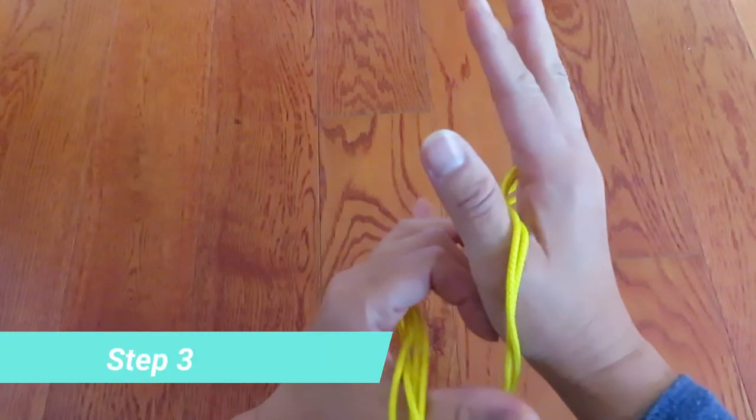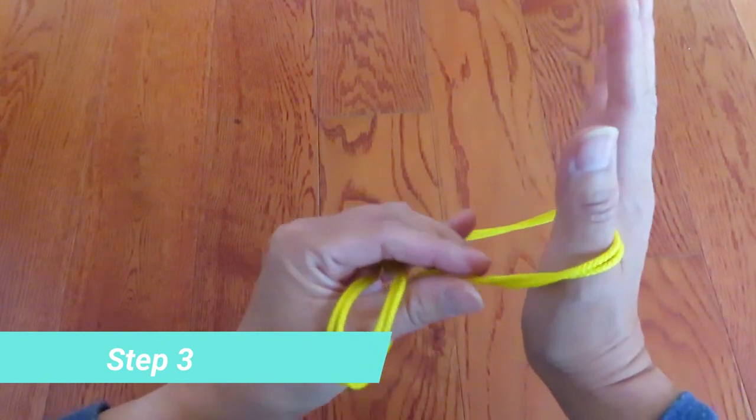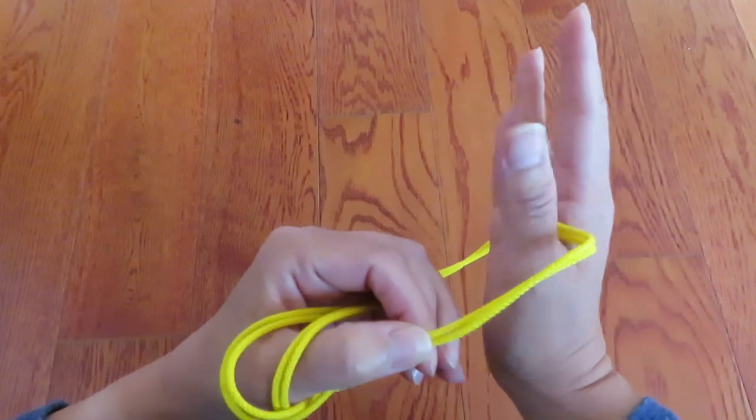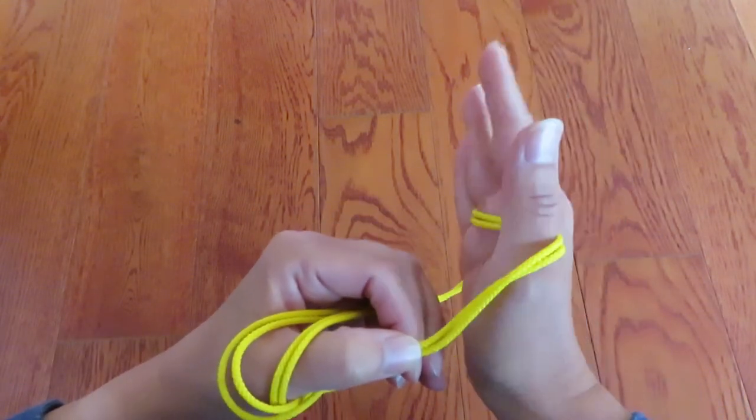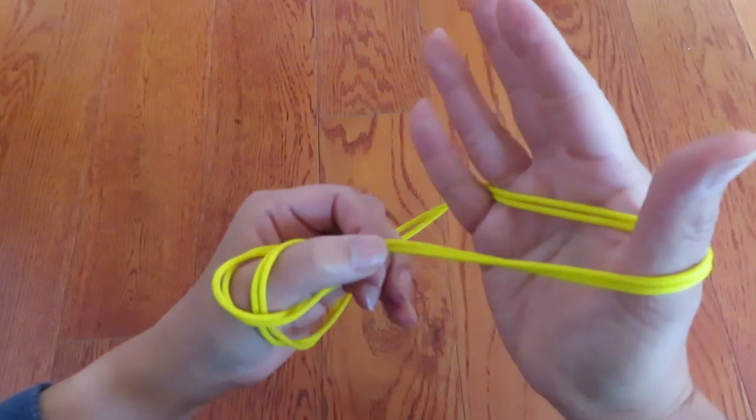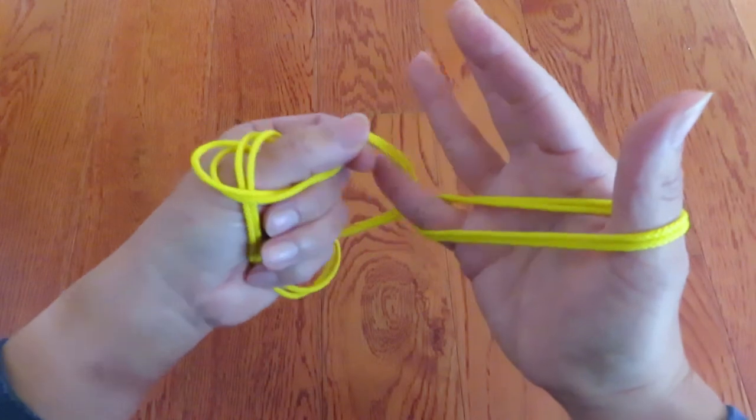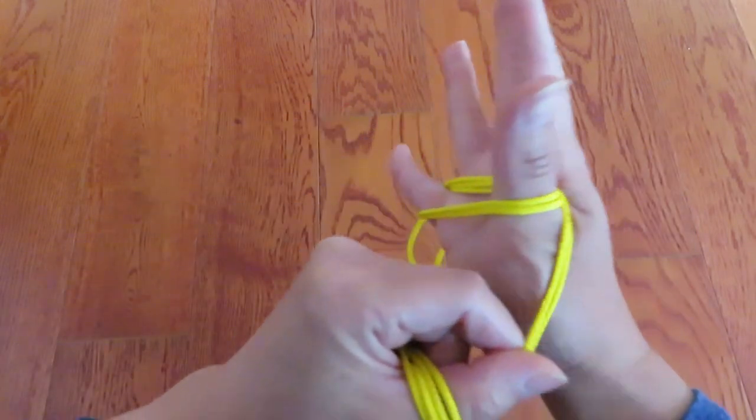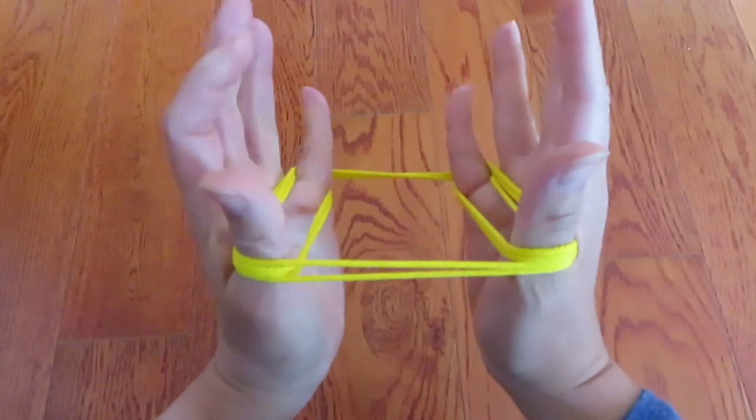Now, pick with the left hand, pick these two strings in front of right hand thumb and go around pinky and come back to the thumb.